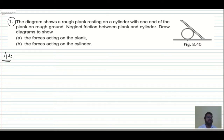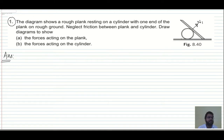Now, as this is the diagram given — figure 8.40 — how many forces are acting on the rod? First we will see the rod and then the cylinder. On the rod, there is a touching between the cylinder and the rod, so there must be a normal reaction N1. And as there is a touching between the ground and the rod, there must be a normal reaction from the ground. Is there any other touching? No, that indicates there is no other normal reaction.